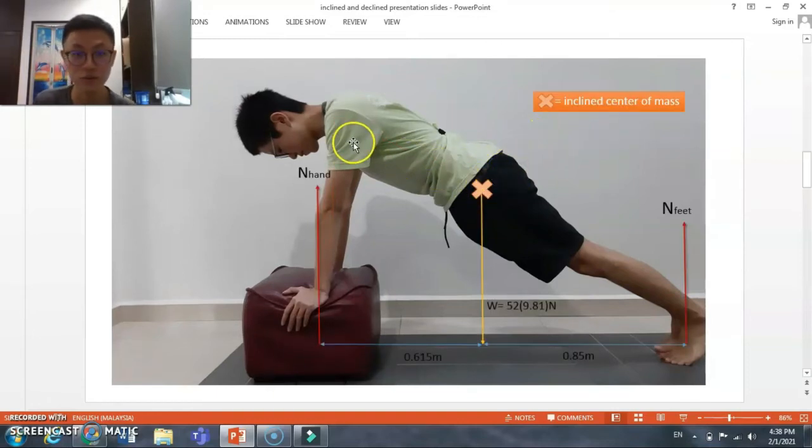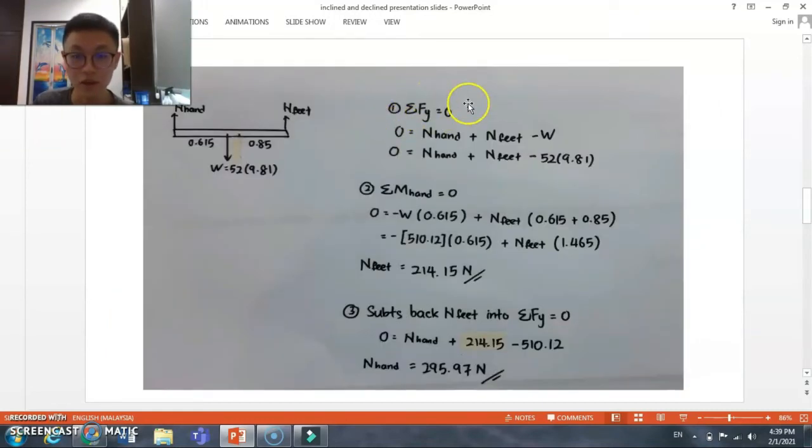Here is the new free body diagram for the incline push-ups. We can use the same approach to find the normal reaction force at the hands. First, we find ΣFy = 0 to have one equation, and we find the summation of moments at one point, using the hand equals zero. We'll have negative for the clockwise rotations and positive force for the anticlockwise rotations. We have the normal reaction of feet equals 214.15 N. And we substitute back to find the normal reaction force of the hand equals 295.97 N. It's actually easier compared to normal push-ups.